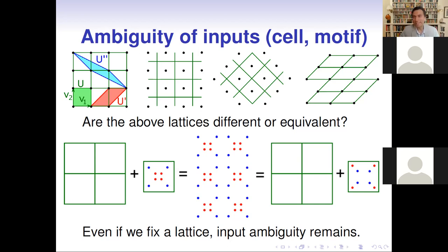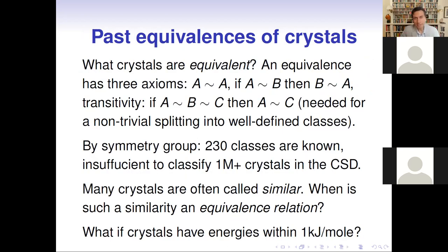This leads to the following ambiguity: if we represent a crystal traditionally by a cell and a motif, there are infinitely many representations. Even if you fix a square unit cell but choose a different motif, you could end up with exactly the same periodic point set, up to translations. That's why we would like to discuss this concept of equivalence in a more axiomatic way.